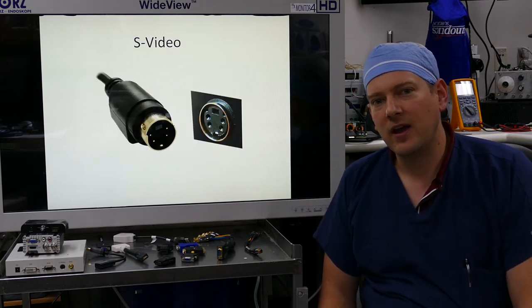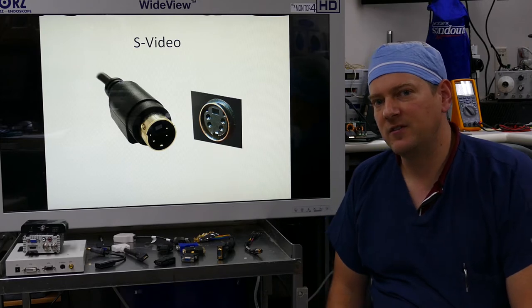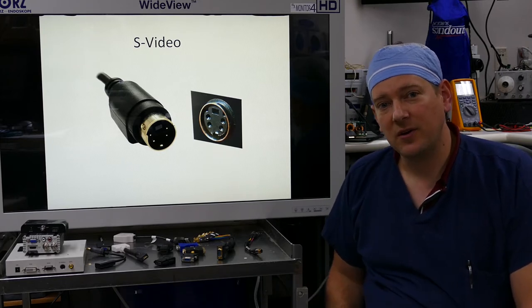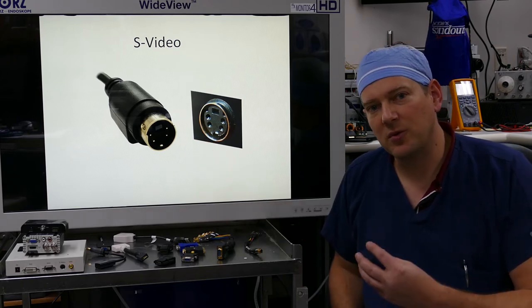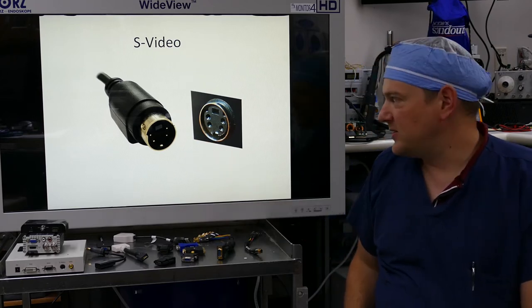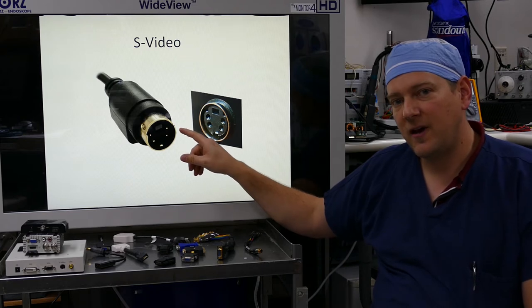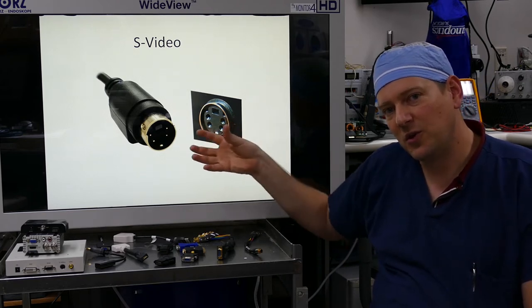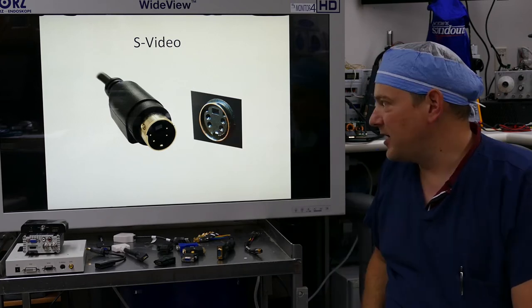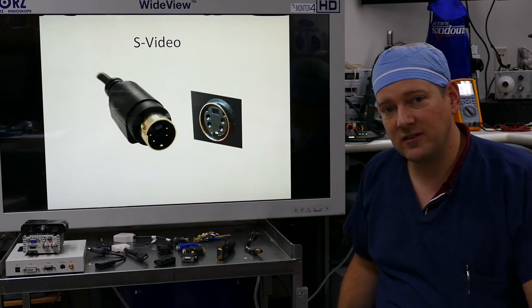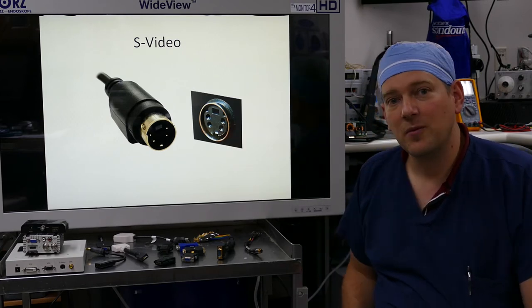Next up is S-Video. It came along with the invention of the VCR. S-Video separates out your color channels into each of these pins, which allows it to have a sharper image. The problem with S-Video is that the connectors, the pins, are fragile, and often users will twist it when they're inserting it and damage both the connector and the pins. S-Video can go a long distance with reasonable clarity, but it's outdated.